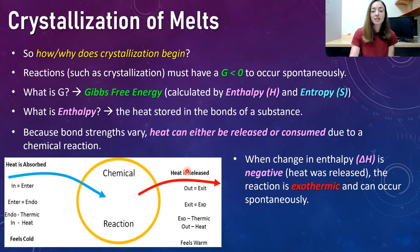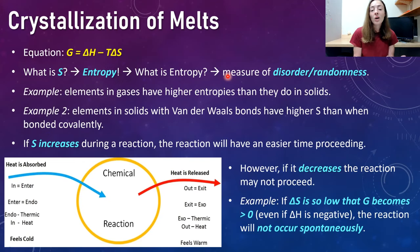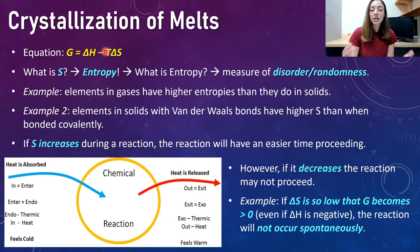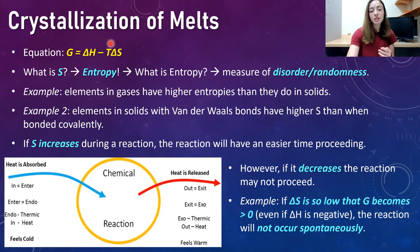An exothermic reaction can occur spontaneously, like when you have a G value of less than zero. However, that's not the entire story — there's another component to our equation: entropy. If we look at the calculation of G, or Gibbs free energy, we can see it takes into account not only the change in enthalpy, but also the change in entropy as well as T for temperature. Entropy is a measure of disorder or randomness.